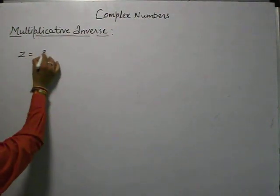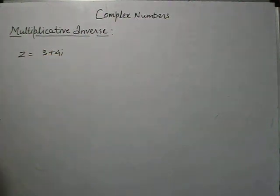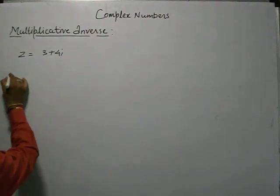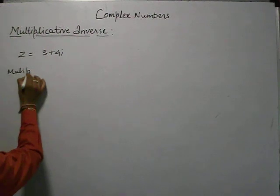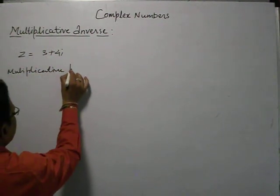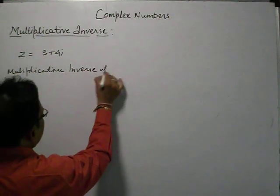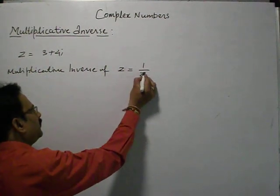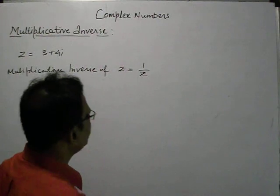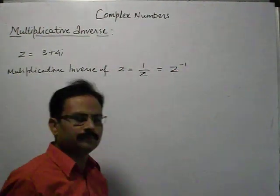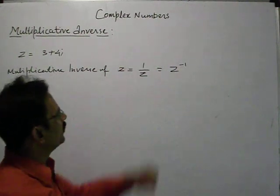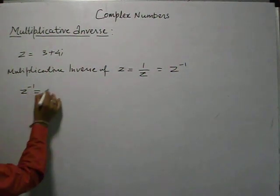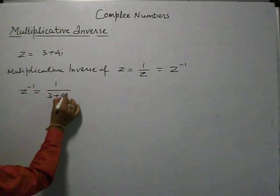If we have a complex number like 3 plus 4i, this is the complex number. We have to find the multiplicative inverse. The multiplicative inverse of z is equal to 1 by z. We can also represent this as z to the power minus 1. So if we have to find the multiplicative inverse of 3 plus 4i, z inverse is equal to 1 upon 3 plus 4i.